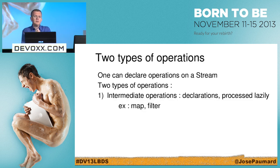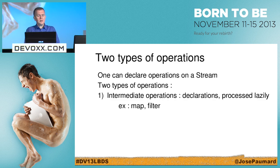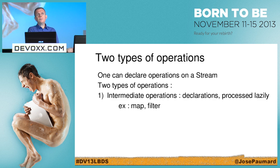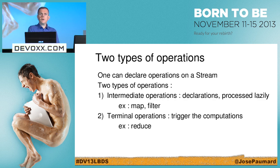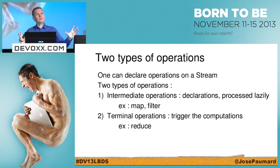There are two types of operations defined on a stream. The first type is called intermediate operations — these are merely declarations and are processed lazily. Calling map on a stream doesn't do any computation; there's no data in the stream so data will not be pulled from the source when I call map. The same goes for filter. To trigger the computation, I've got terminal operations. Reduce is a terminal operation — calling this method will effectively trigger the computation, pulling data from the source.